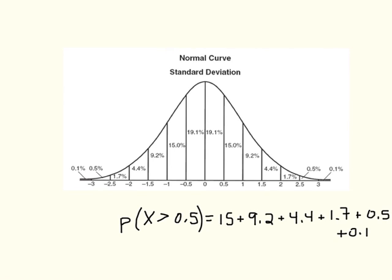The probability of any score x being greater than 0.5 is just the sum of these probabilities: 15 plus 9.2 plus 4.4 plus 1.7 plus 0.5 plus 0.1, which equals 30.9. So given this standard normal distribution, the probability of any score being above 0.5 is 30.9% — the probability of a score falling within that area of the curve.